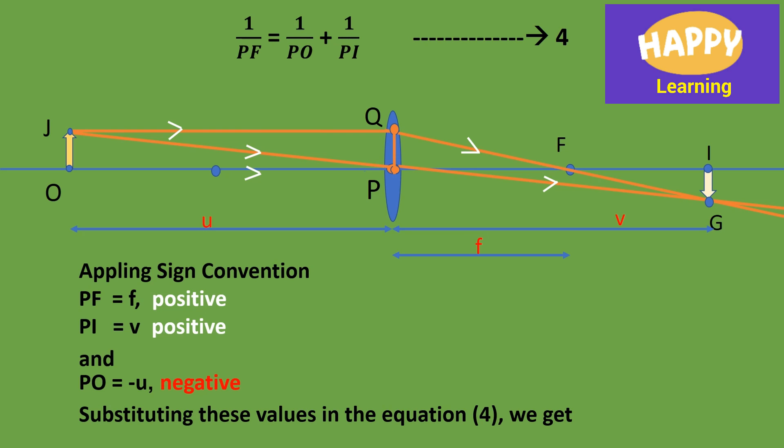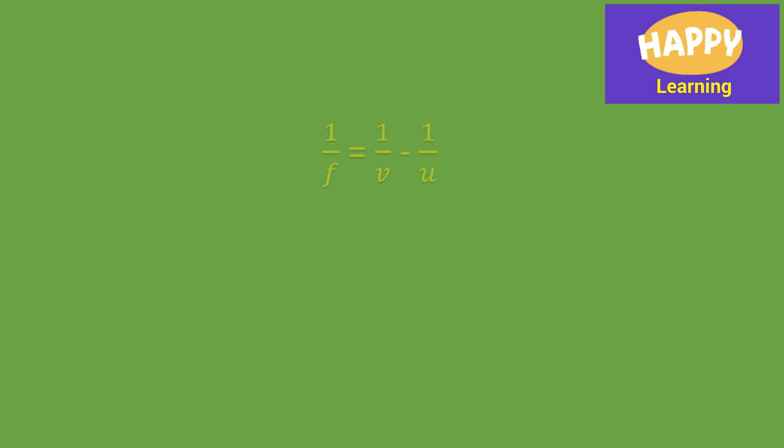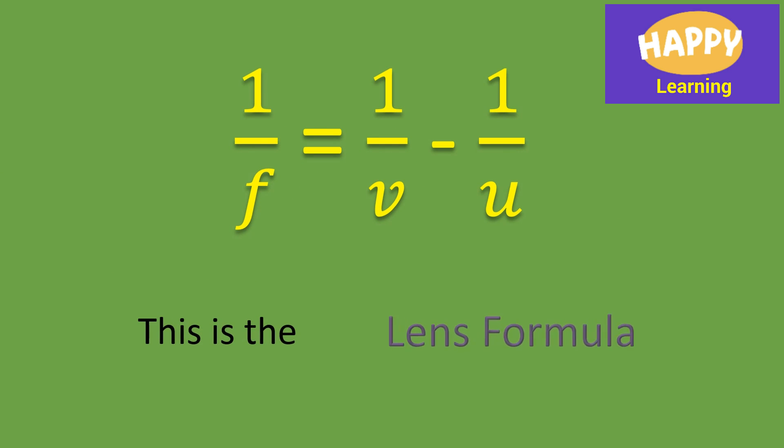1 by F is equal to 1 by V minus 1 by U. And this is the Lens formula.